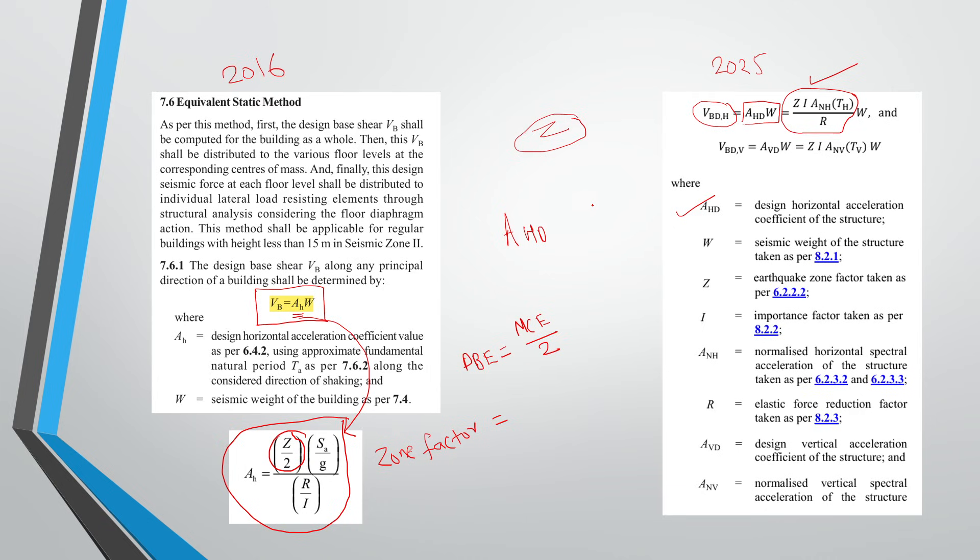The next point is in 2016, as you can see here, there was SA by G, that is spectral acceleration normalized to gravity. So there was SA by G in 2016. Now in 2025, it is ANH.